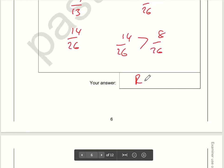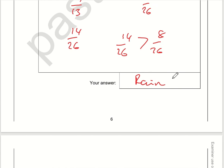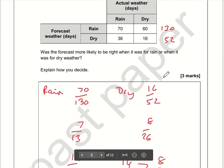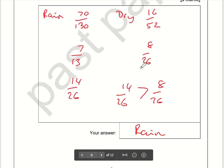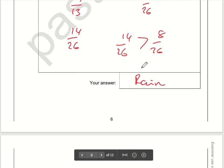The answer is rain — rain is more accurately predicted.